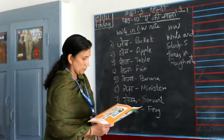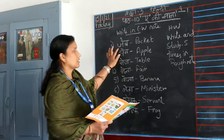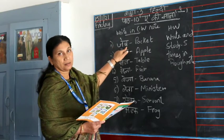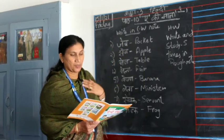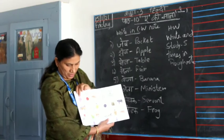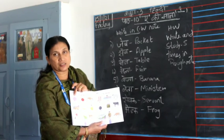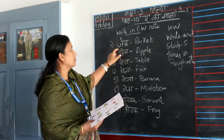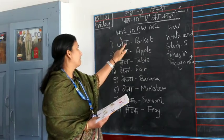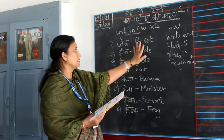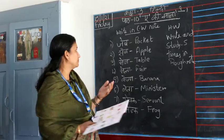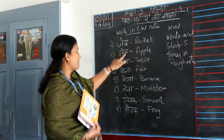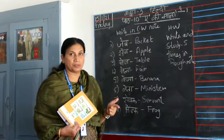The first word is 'Jeb.' J-E-B. Jeb means a pocket in a shirt. You can see the pocket and shirt in the picture. That is called a pocket. Jeb means pocket.